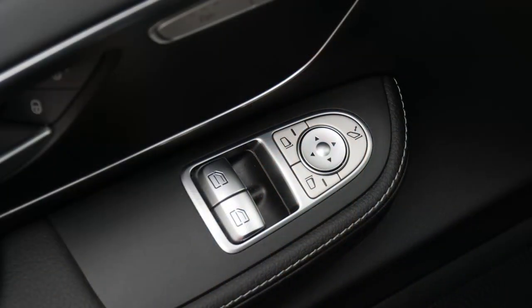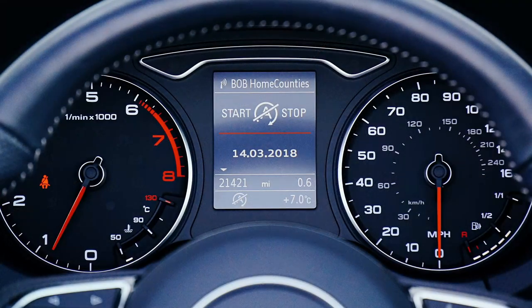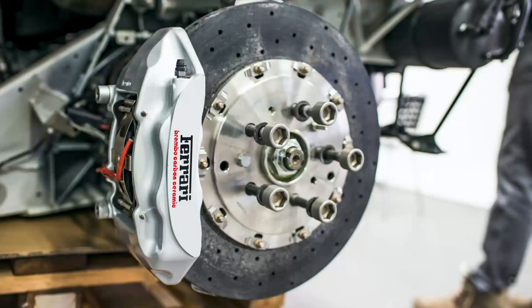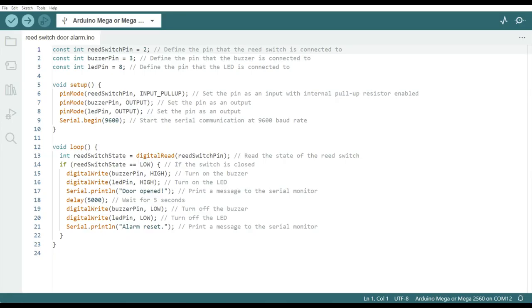In the automotive industry, you may find them in door and window switches, speed sensors, fuel level sensors, and anti-lock braking systems, just to name a few. There are lots of others you can check out. So we're going to look at a setup here in just a second, but I wanted to show you the code.